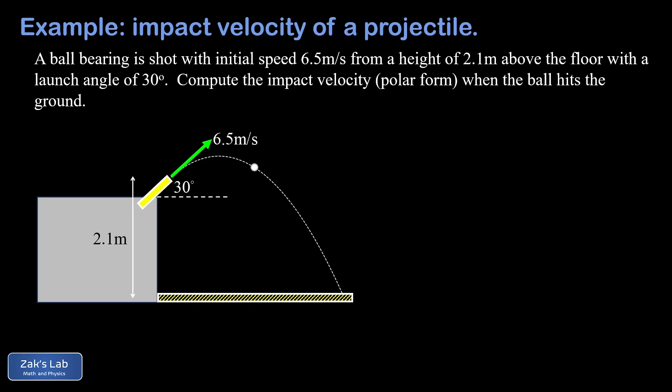In this problem we're computing the impact velocity of a projectile, in other words what's the velocity right when it hits the ground. There's our final velocity vector right when the projectile hits the ground and we're going to call that v. Our goal is to put this in polar form, meaning we need to get the magnitude of that velocity vector or the speed and we need to get a direction labeled as an angle.